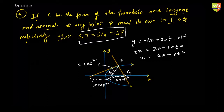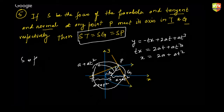That means with S as the center and ST, SG, SP as the radius, we can draw a circle. This gives a 90-degree angle at P, and S is the midpoint of T and G.